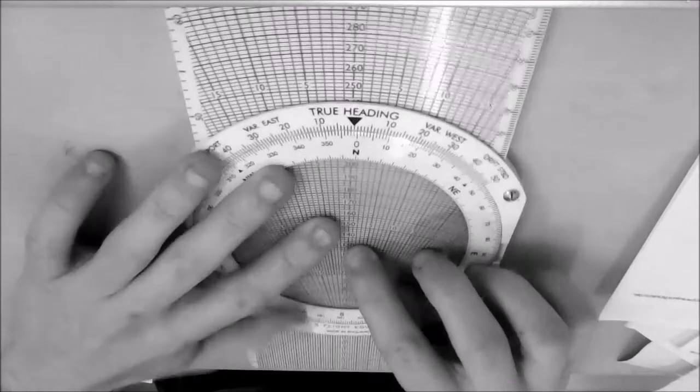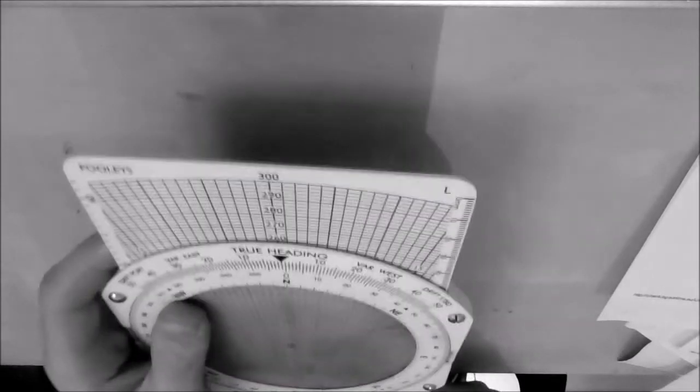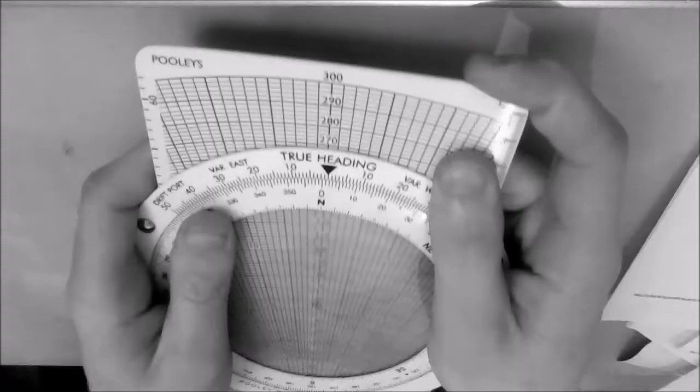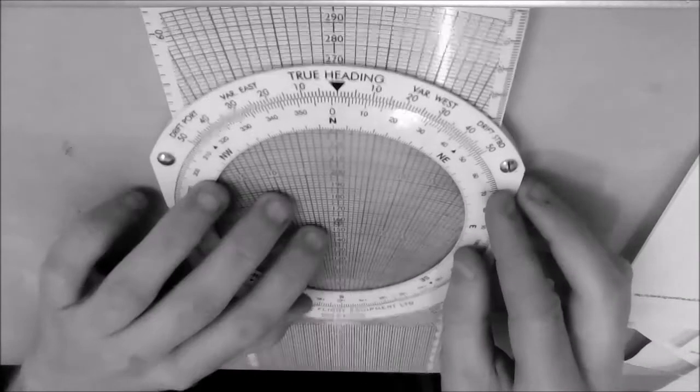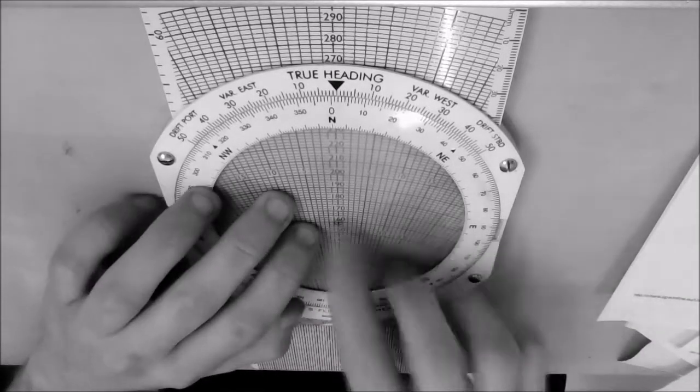So we'll use this side of the slider, but inside the CRP5, and put the centre dot of our CRP5 over the 160 mark, like so. So this dot here always sits over our TAS.